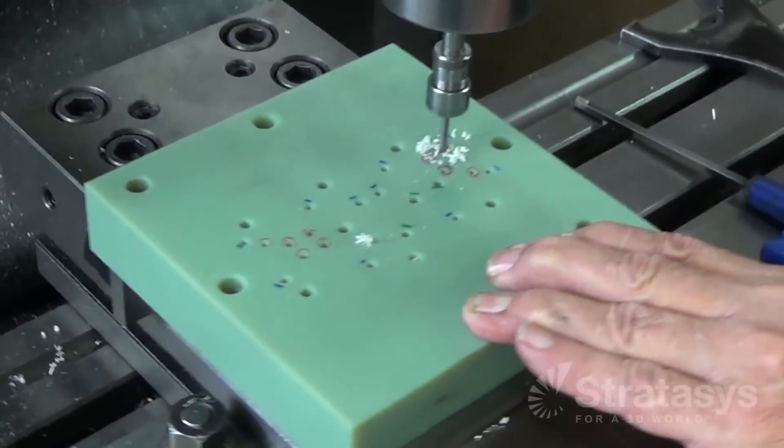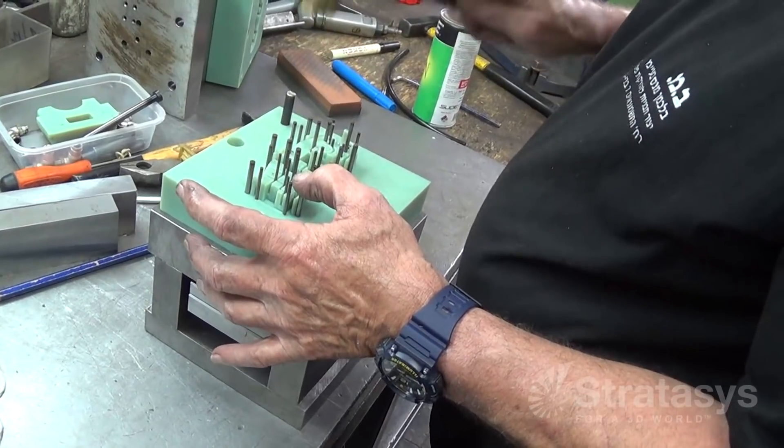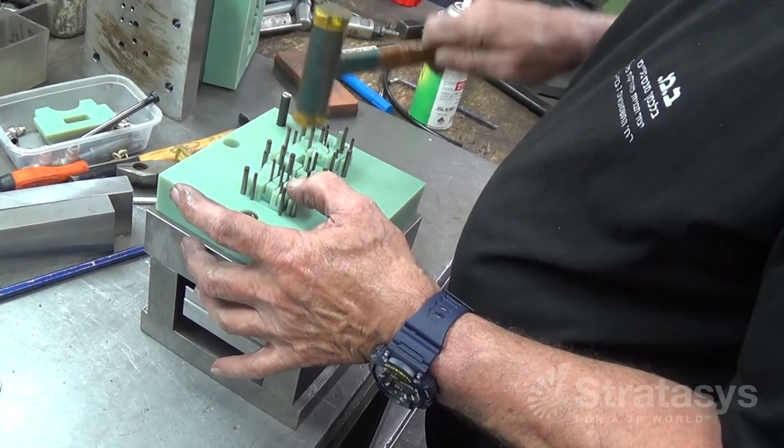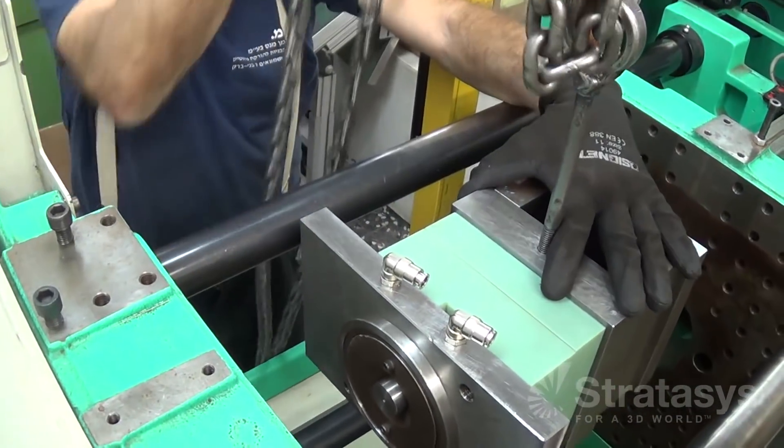For automated extraction, fit an ejection system, which uses pins that pass through the core to push a part from the mold, and then mount the printed tool in a mold base.